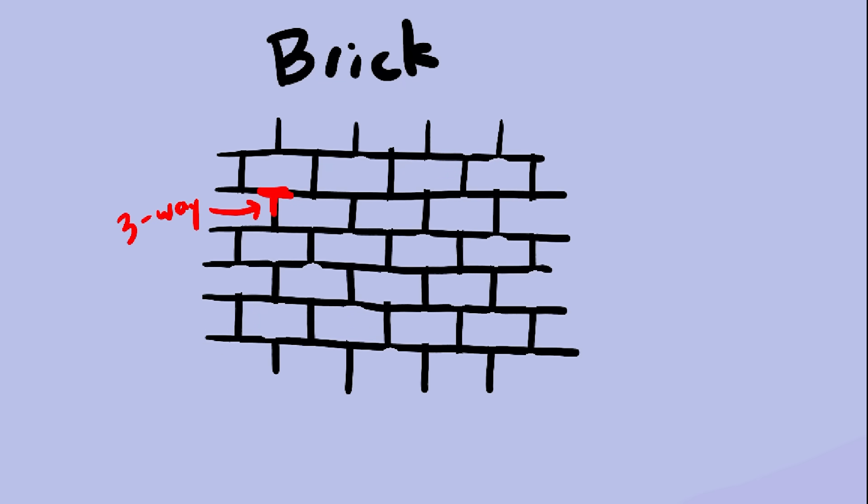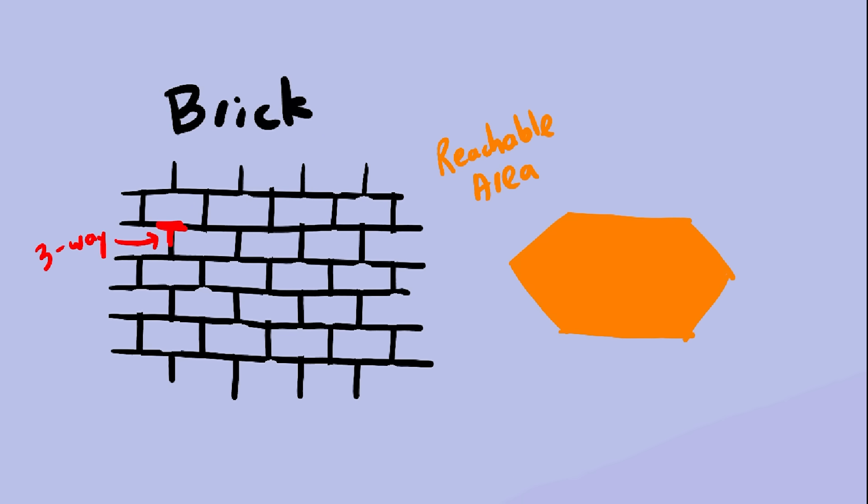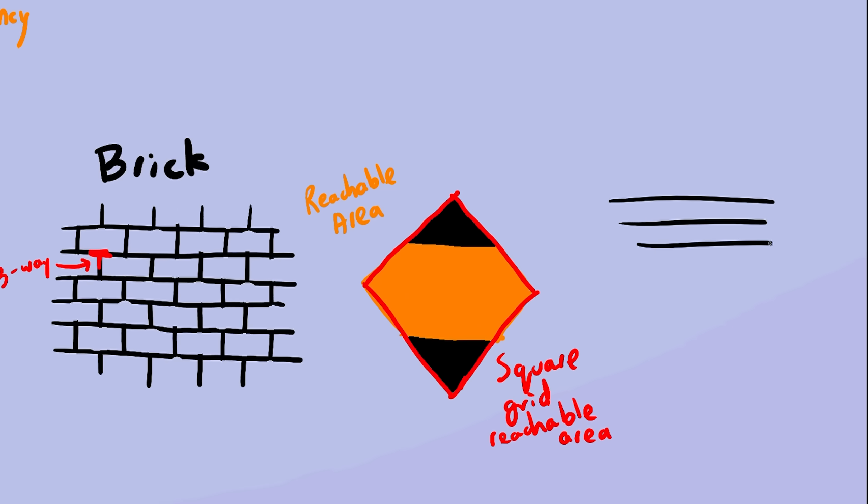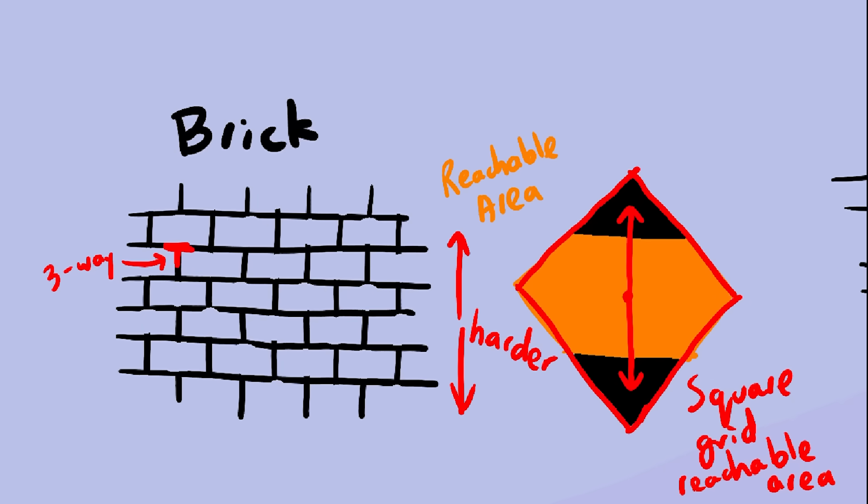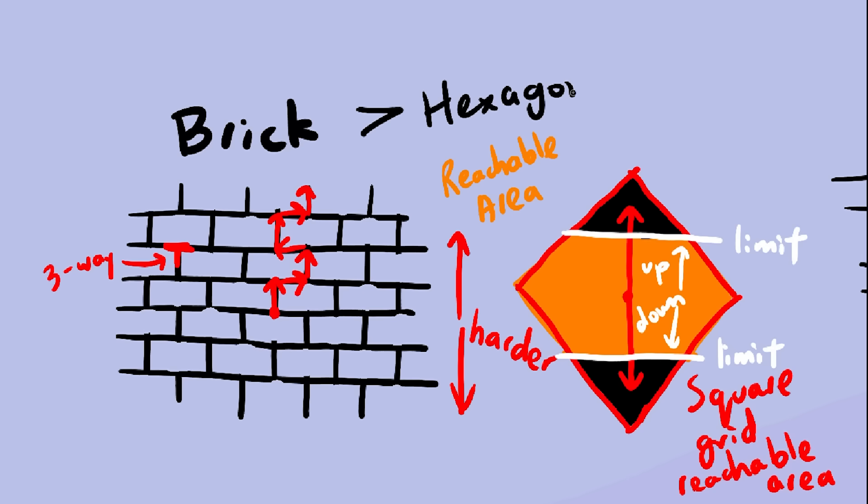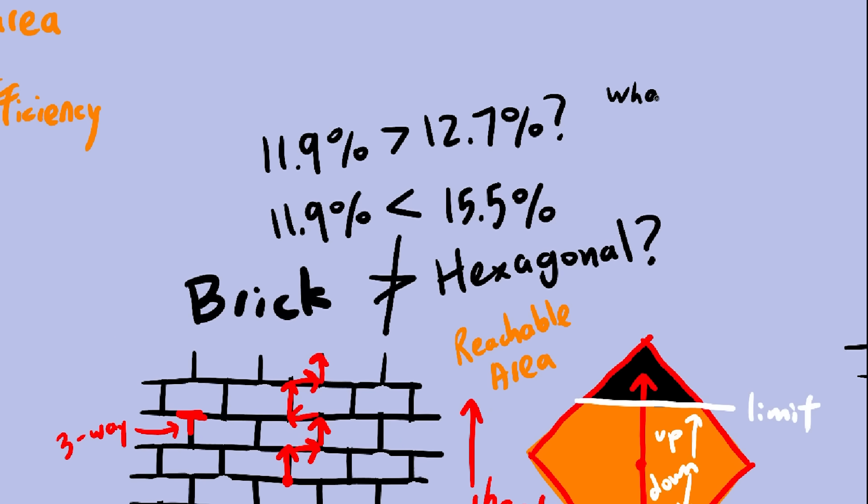We do have one more contender, though. If you remove some sections of road from square grids, you get a brick pattern with three-way intersections, not four. Its reachable area is almost as good as a square grid's. It looks like this. Basically, the square grid reachable area, but with these two parts cut off. The reason these two parts are cut off is because in a square grid, moving up or down is pretty straightforward. But in the brick grid, moving up or down is a lot more of a hassle because for every up, you have to go right or left in order to go up again. So your going up speed is only half of what it is in the square grid. Hence why these two sections are not reachable for the brick grid. So does this modified square grid end up winning against the hexagonal one? No.